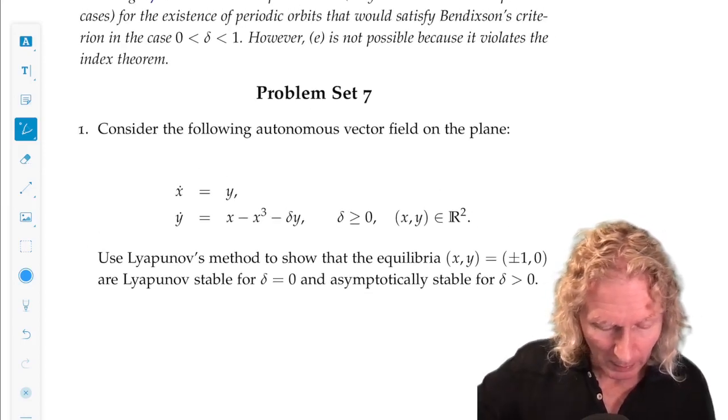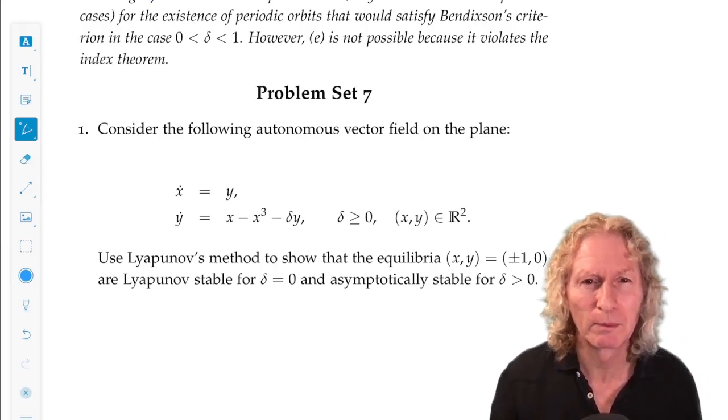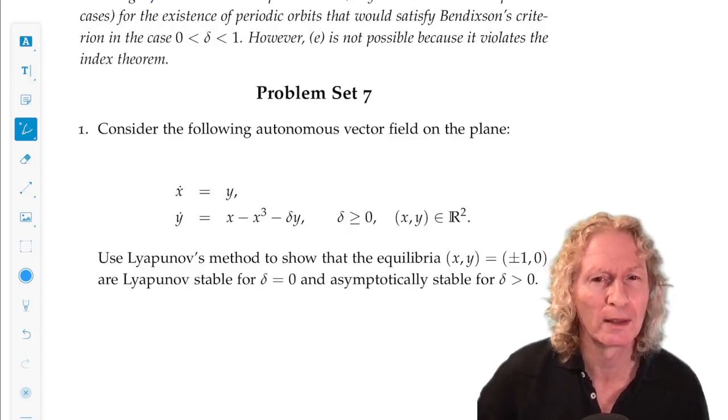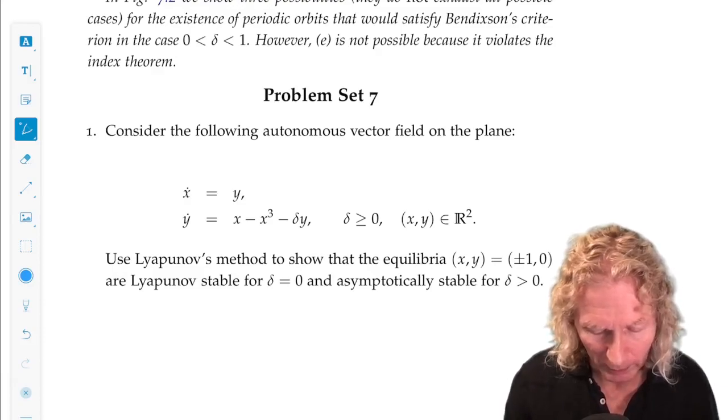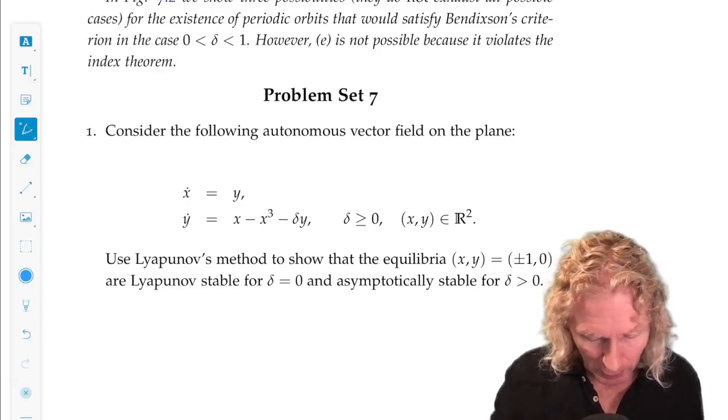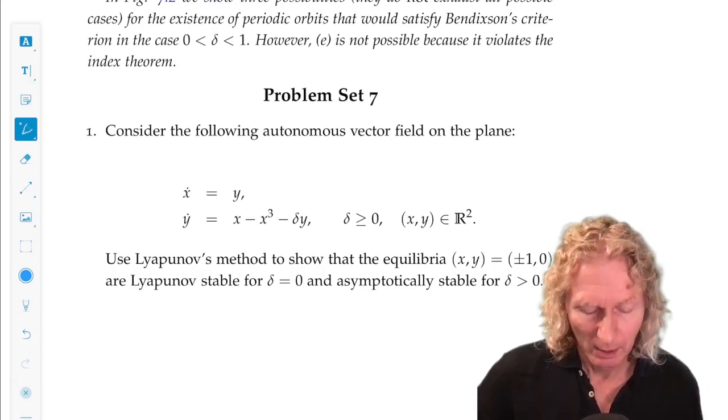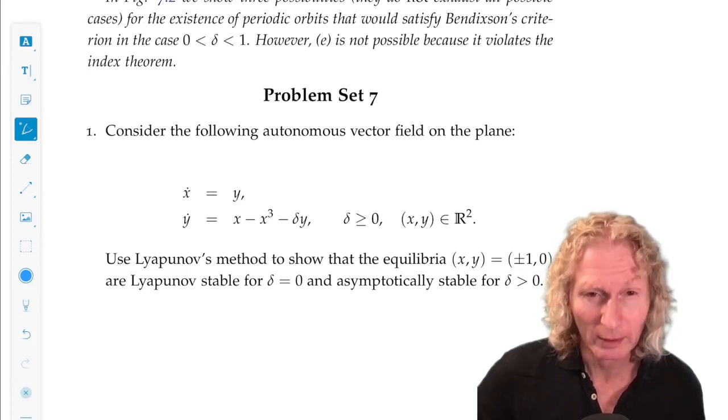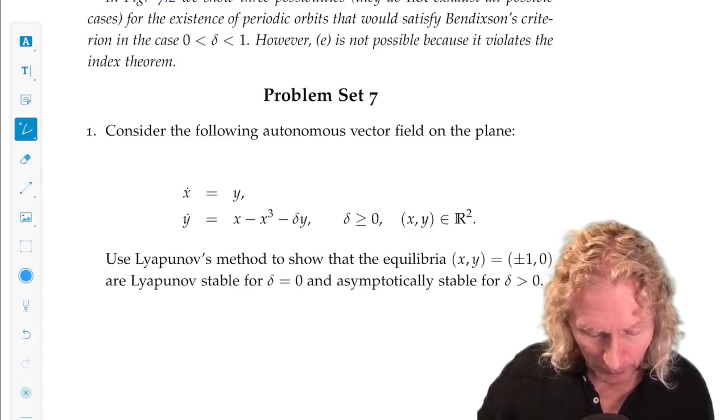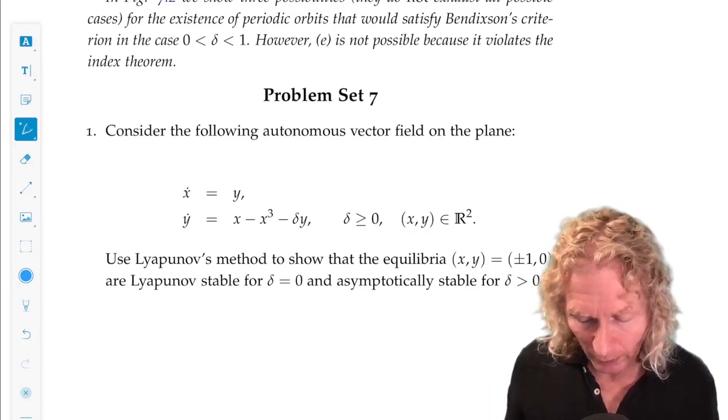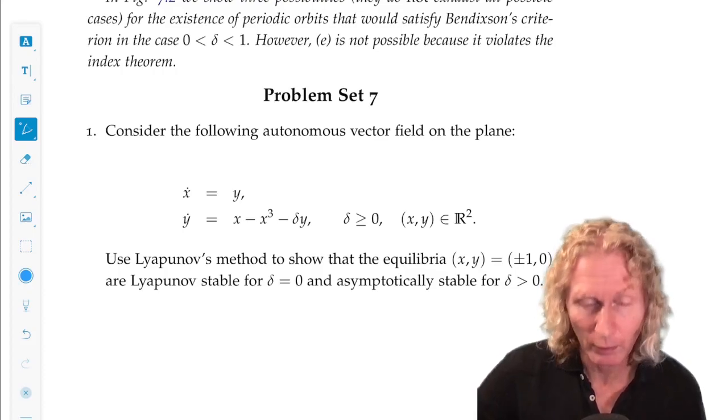The first one is concerned with this autonomous vector field in the plane. This is the type of nonlinear vector field that we've seen an awful lot. There's a slight wrinkle in this one. Nevertheless, the parameter delta is, we're going to take it greater than or equal to zero. You can easily get the stability of the fixed points using linearization. But what I want you to do is use Lyapunov's method to show that the equilibria, not the origin, but the two equilibria plus or minus one, zero, are Lyapunov stable for delta equals zero and asymptotically stable for delta greater than zero.